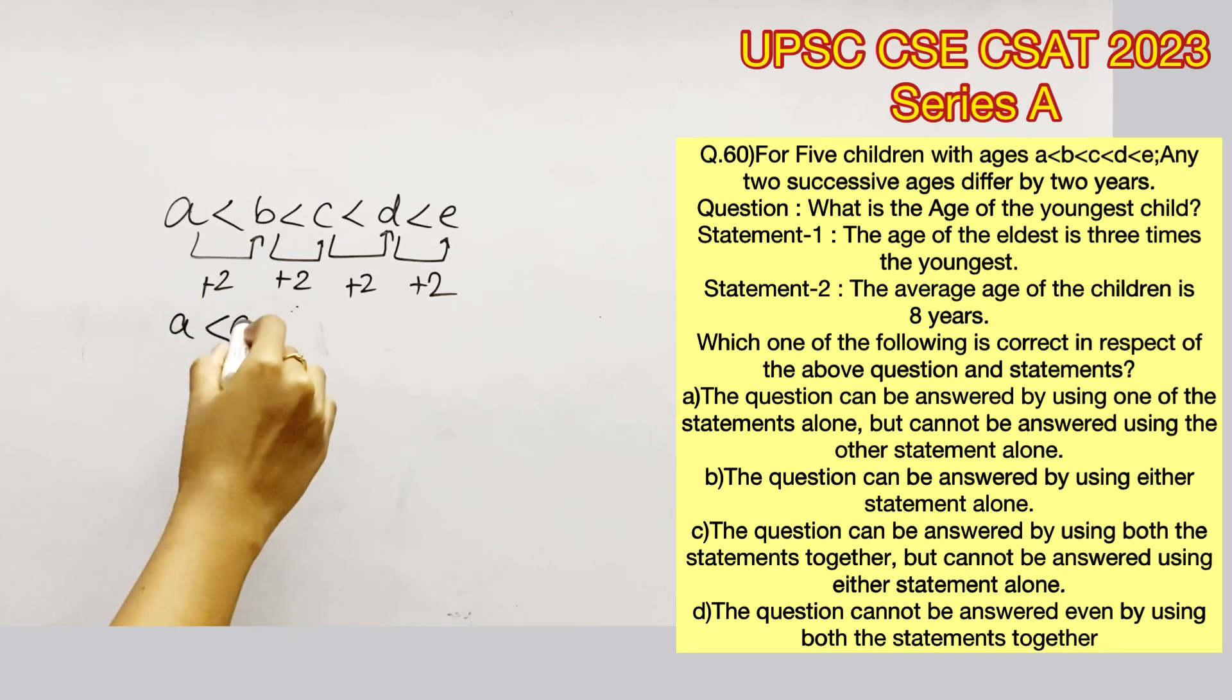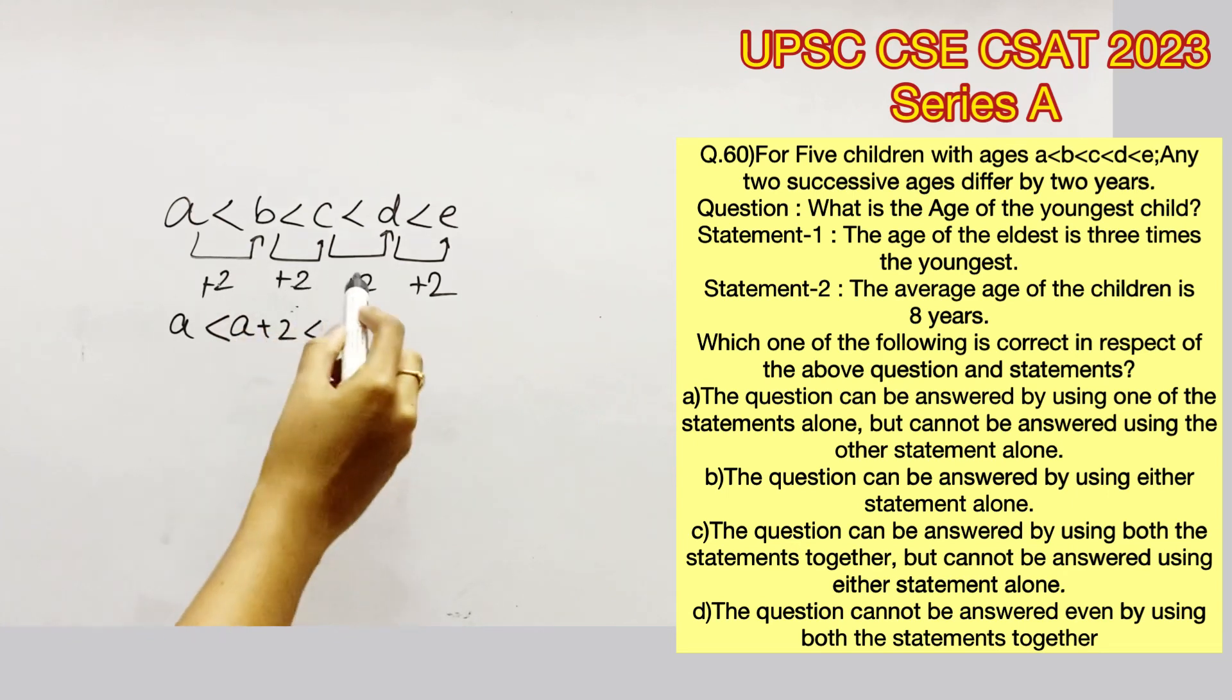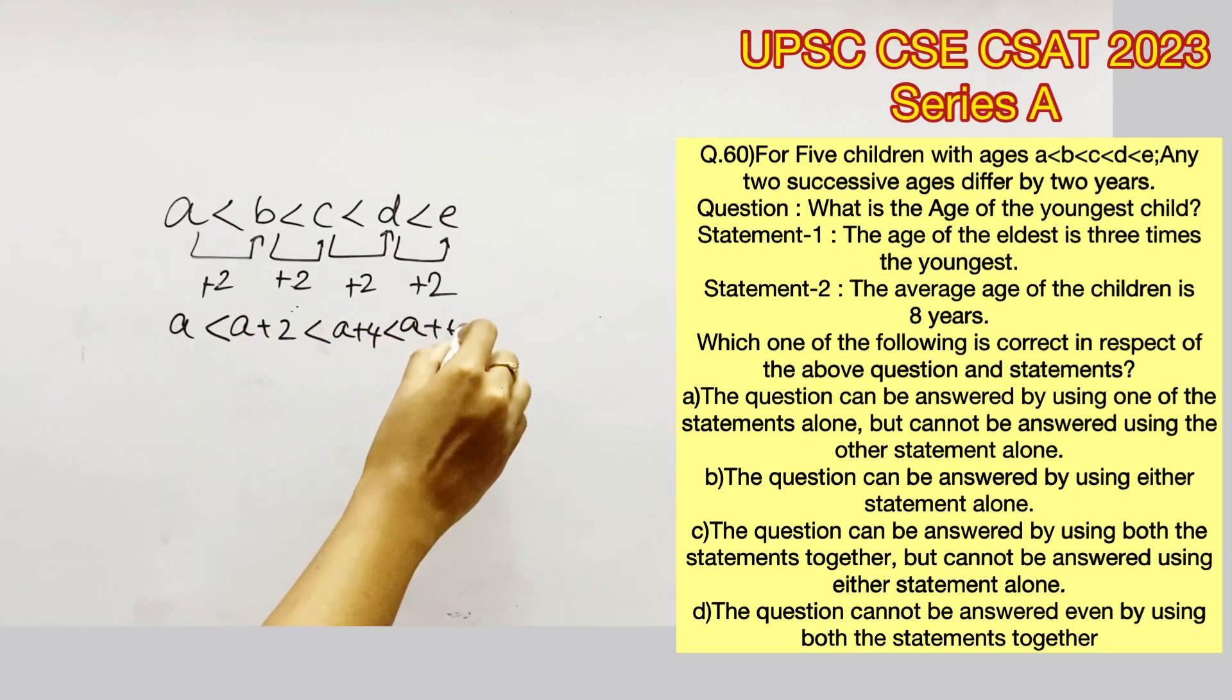We can write this as A less than A plus 2, that will be the age of B. The age of C can be represented by A plus 4, age of D by A plus 6, and age of E can be represented by A plus 8.